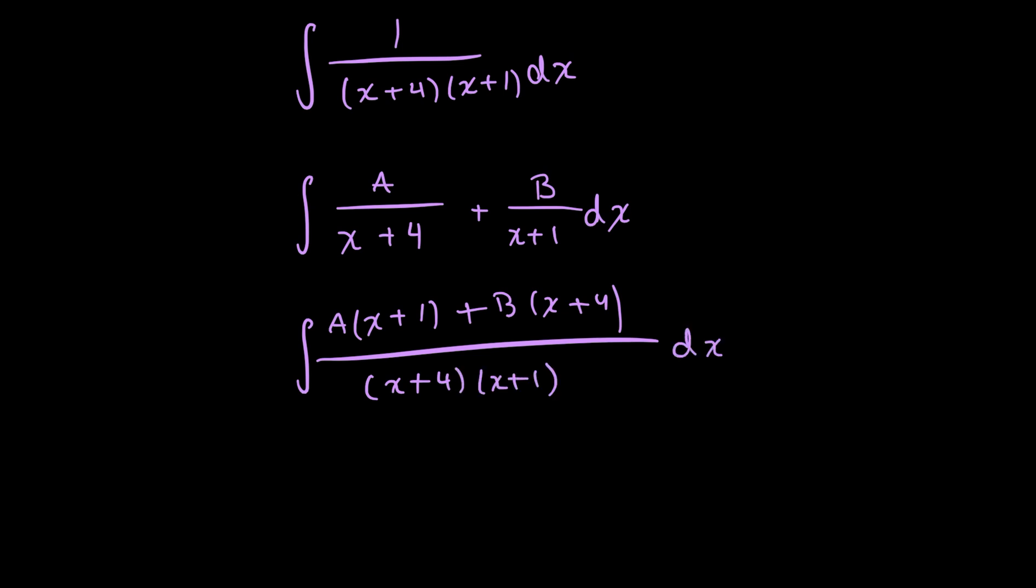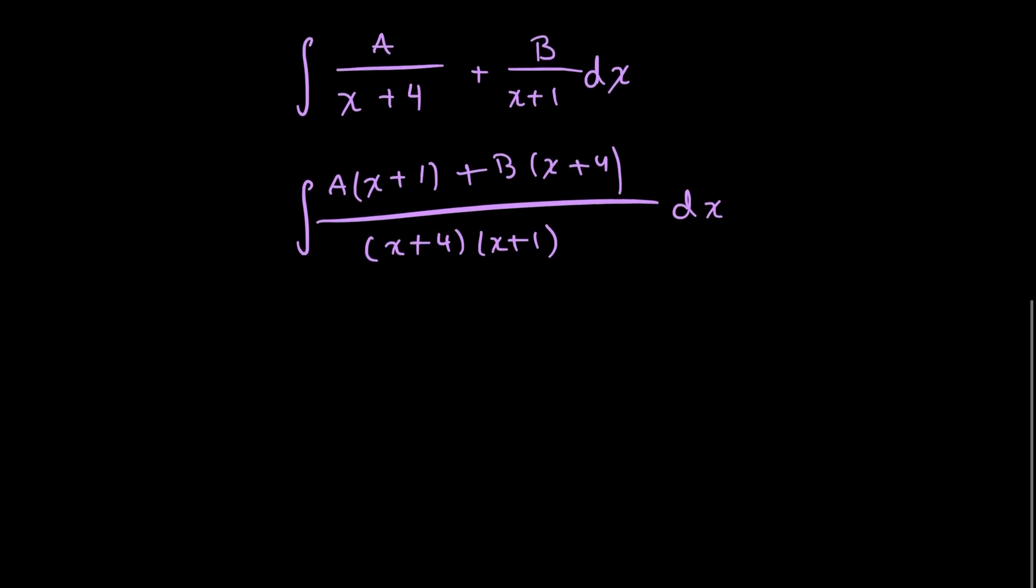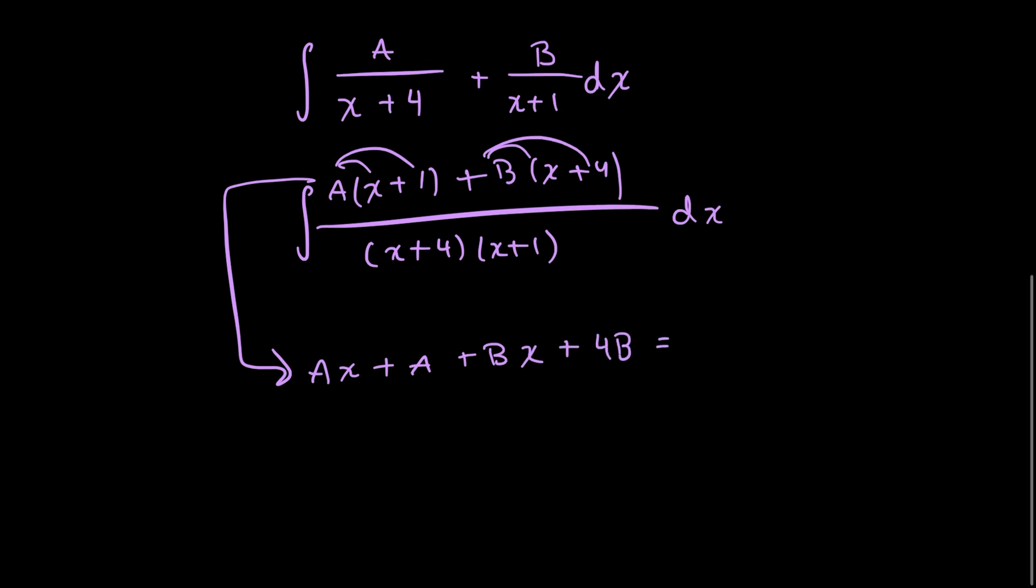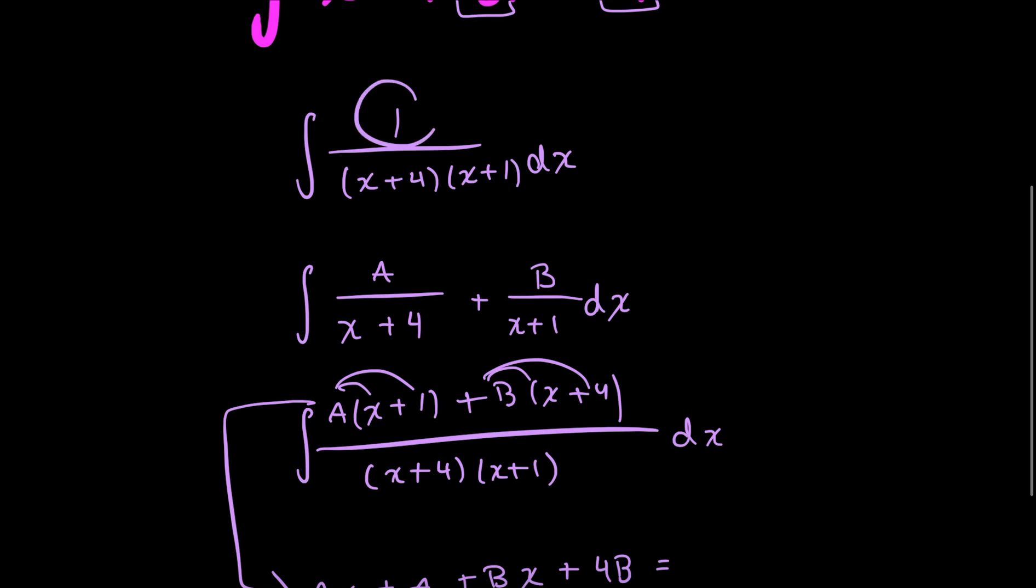And now I don't really care about the denominator. I'm just looking at the numerator for the time and just pulling this out of the integral for, just to find the constants a and b. I'll be distributing the a's and b's in here. So I have ax plus a plus bx plus 4b is all equal to the original numerator of that first integral. So just 1.